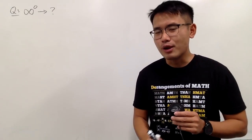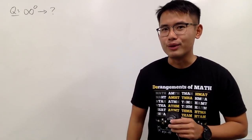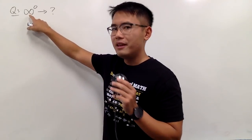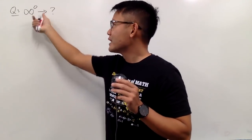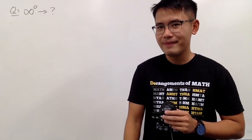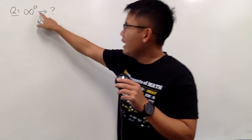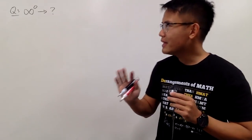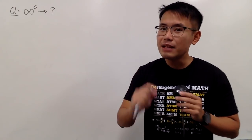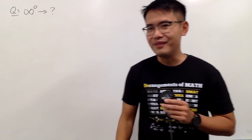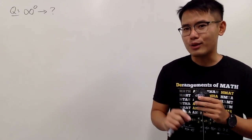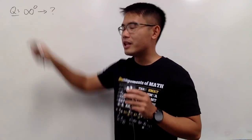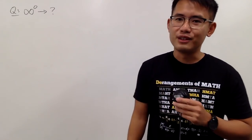In this video, let's talk about infinity to the zero's power. When we are calculating a limit and we end up with the form infinity to the zero's power, can we really draw a conclusion right away? A lot of people will think that since we have a zero in the exponent, the answer should just be one. Well, that's only sometimes — this form does give you one for the answer, but not all the time. Let me show you a few examples where this gives you different answers.